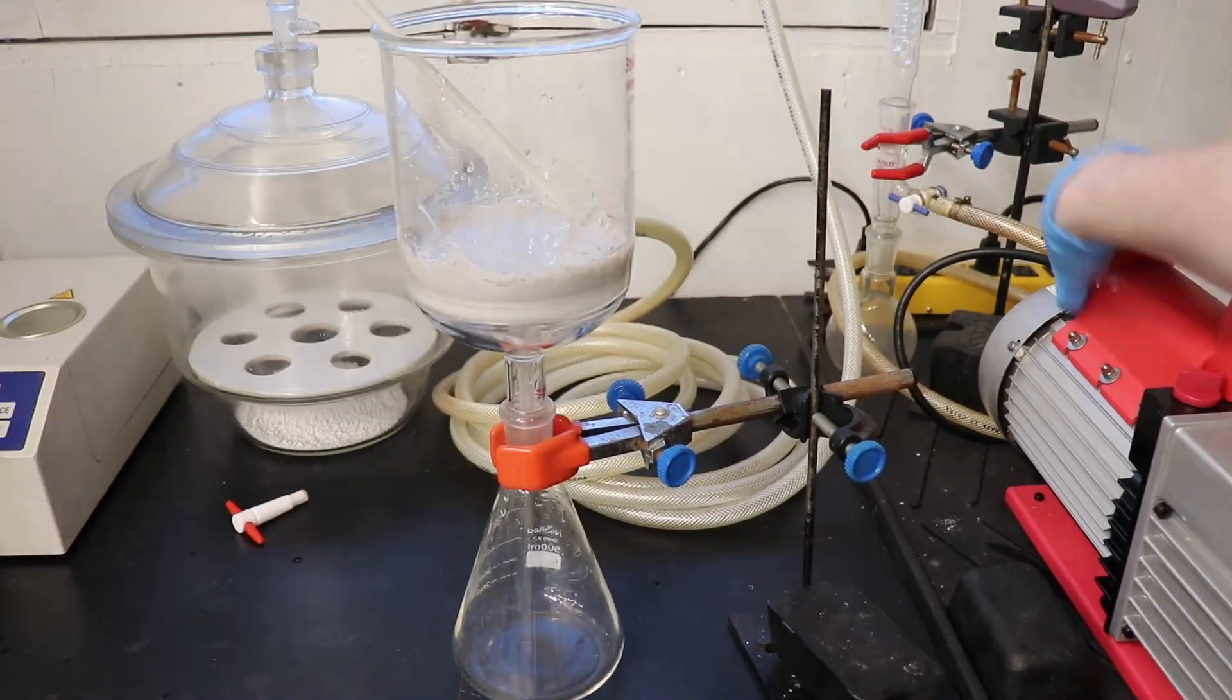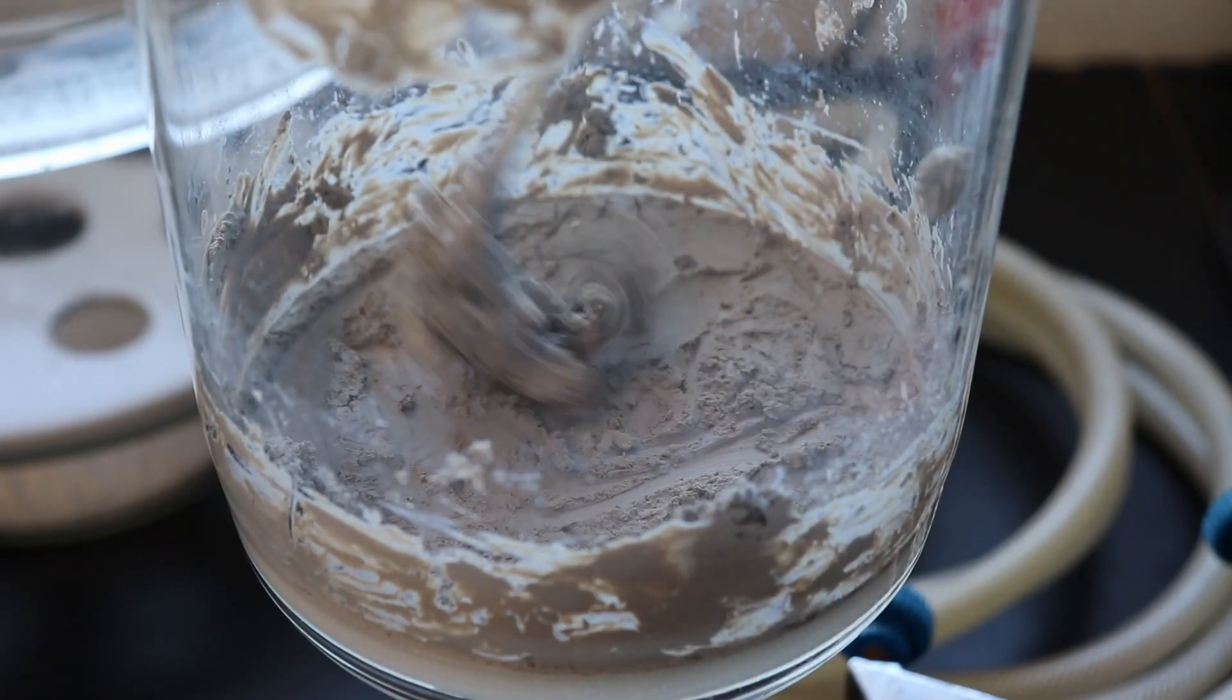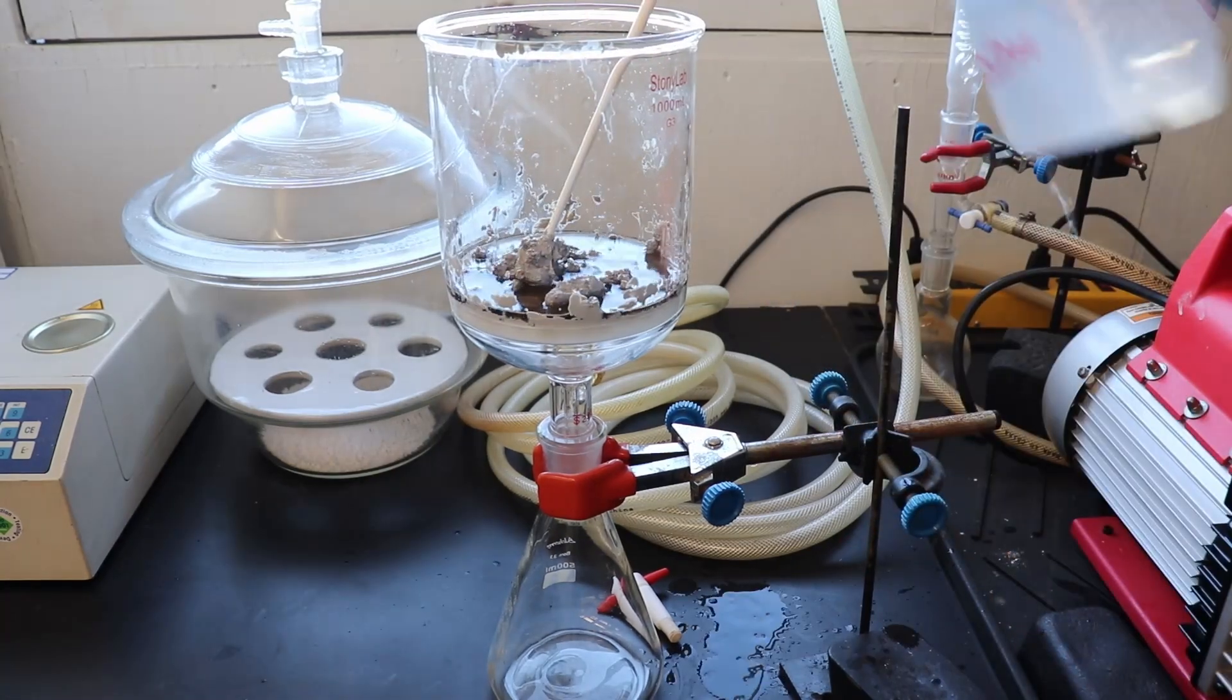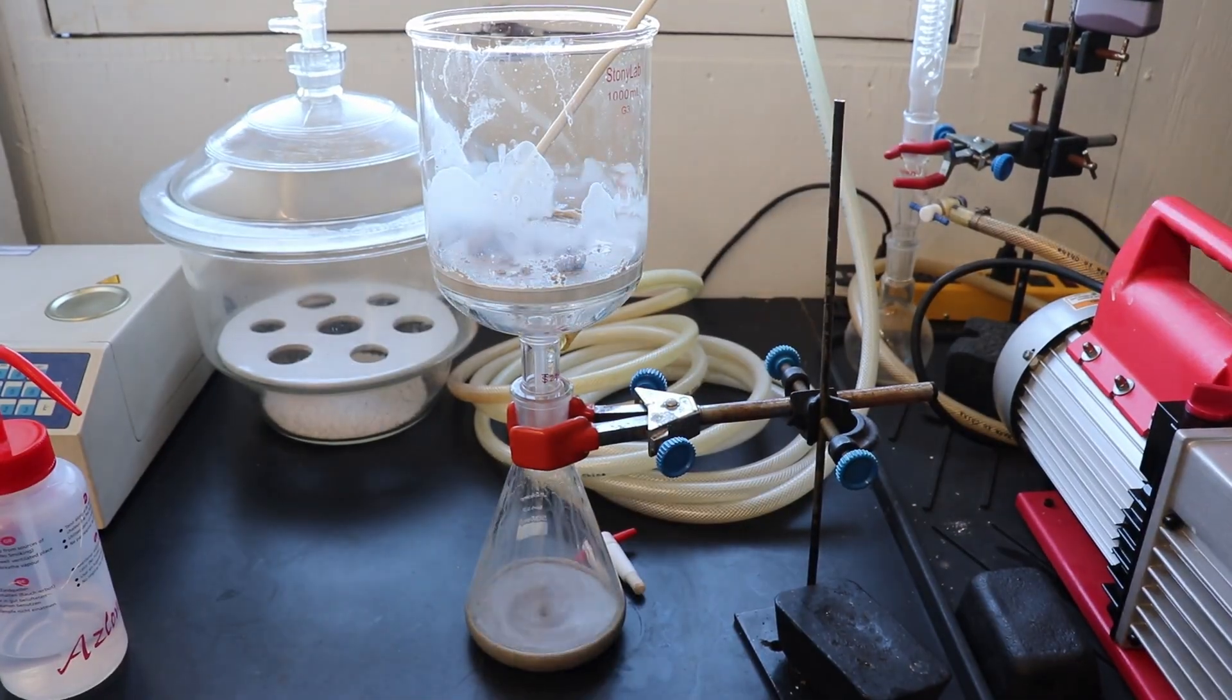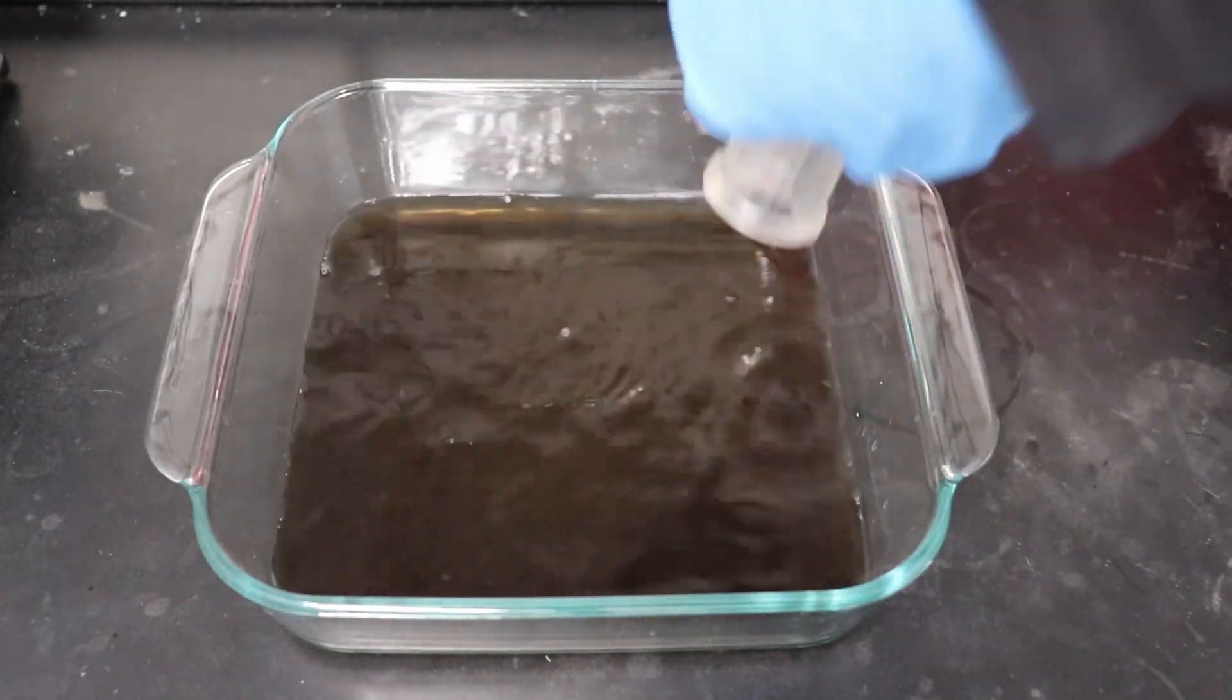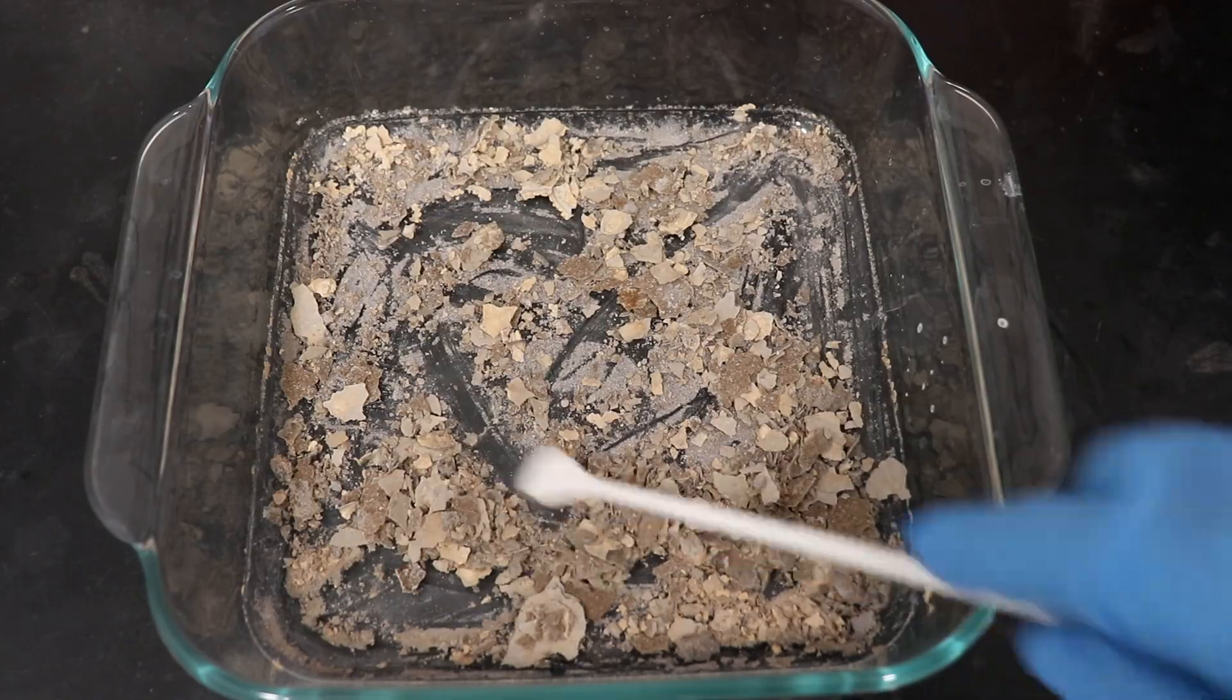I ended up with this horribly sticky gray mass of material that I had to dissolve out of the filter using acetone. The acetone solution of our crude product was poured into a dish and allowed to evaporate off. This left me with 7.9 grams of a very dirty looking material, so I needed further purification.